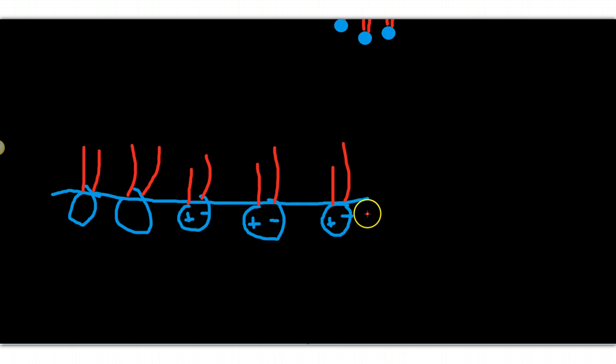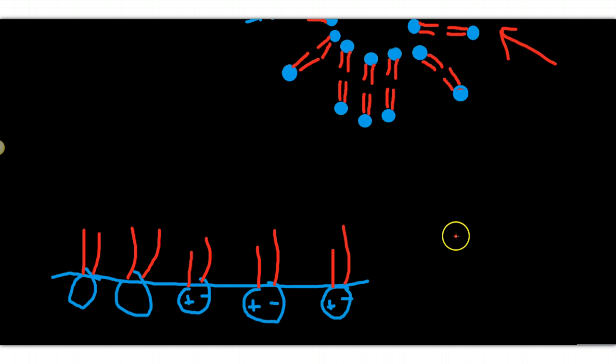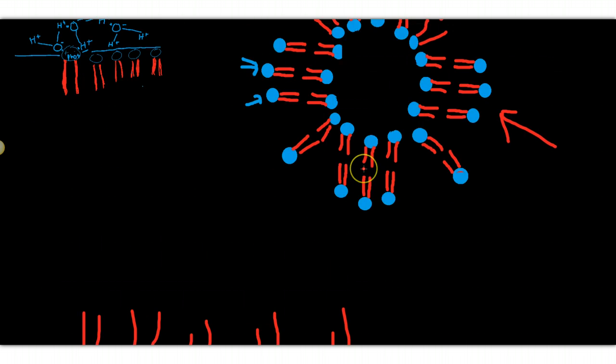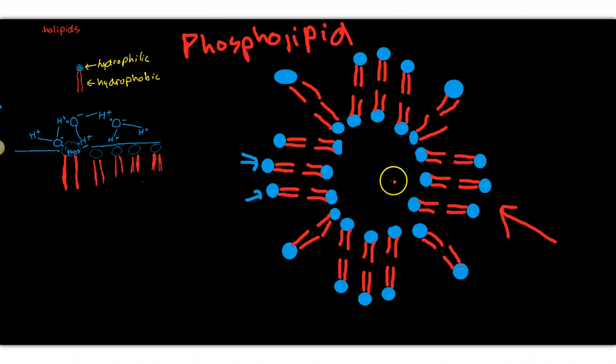So there are two ways for phospholipids to be in water. They can either coat the surface of water, or if they are shaken up and suspended in water, they tend to form these little bubbles. The non-polar ends are never facing water because they are so strongly repelled by the polar water molecules.